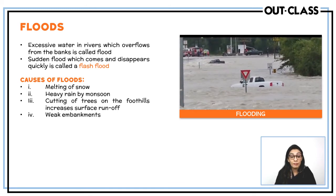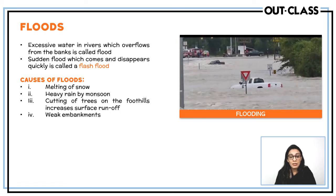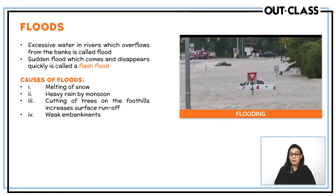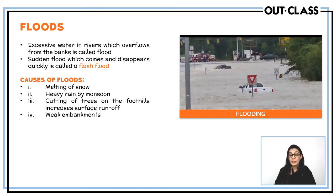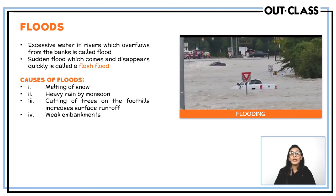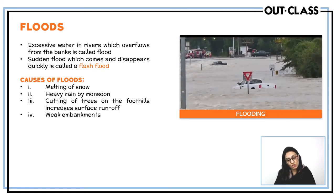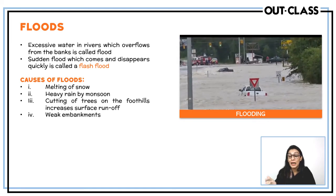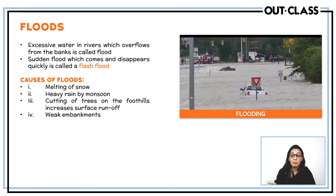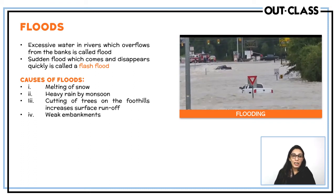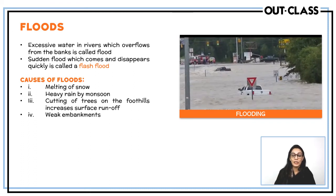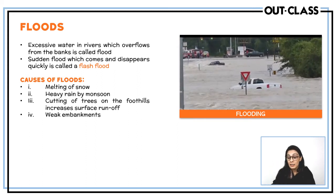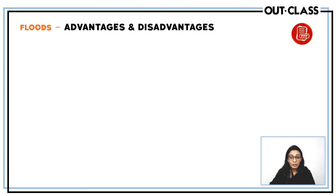Floods are excessive water flows that overflow river banks. In Pakistan, the major reasons for flooding are monsoon rains, melting of snow, deforestation, and weak embankments that break during flooding season and are not rebuilt. There are both natural reasons — melting snow and heavy rainfall — and human reasons — cutting trees and building weak embankments without upgrading them.